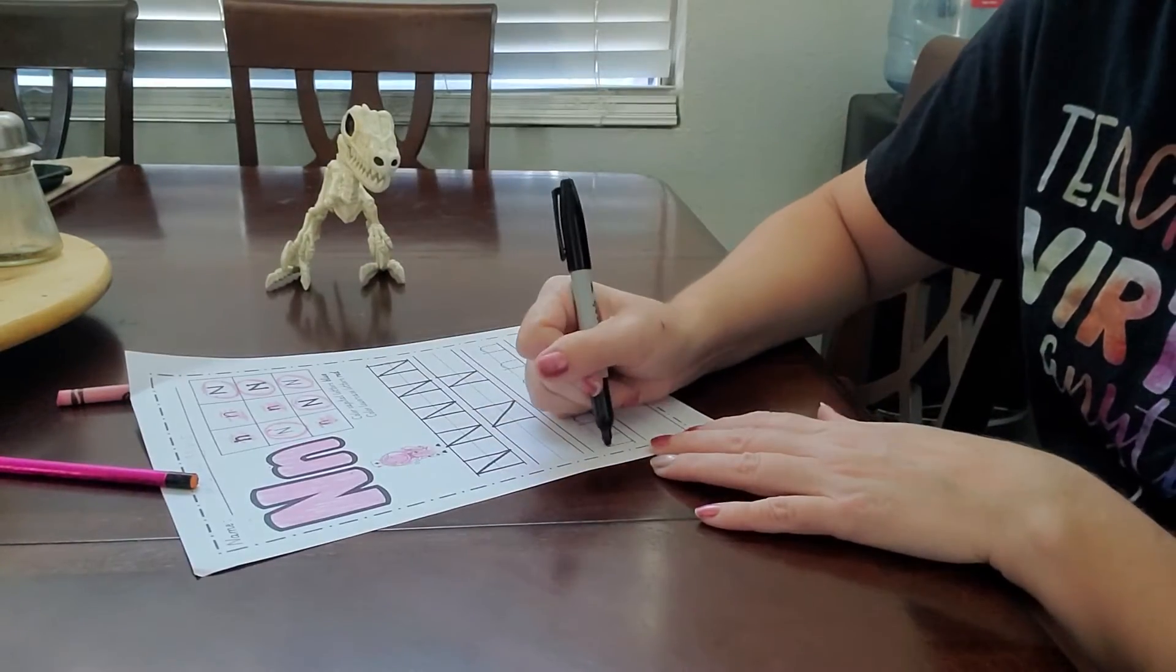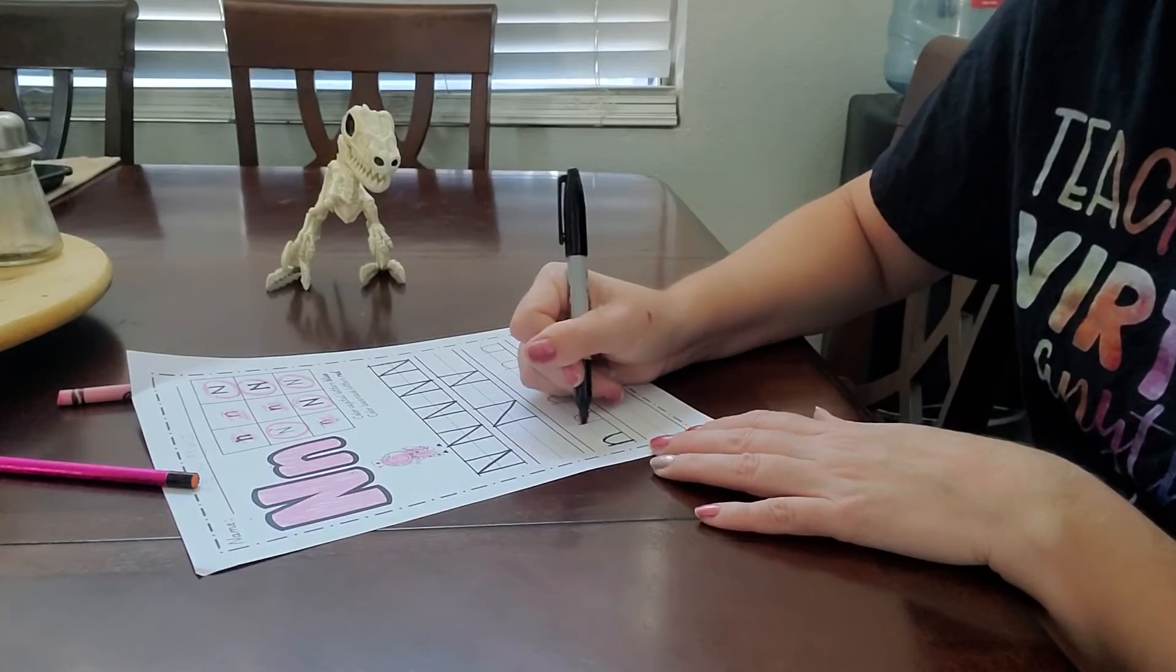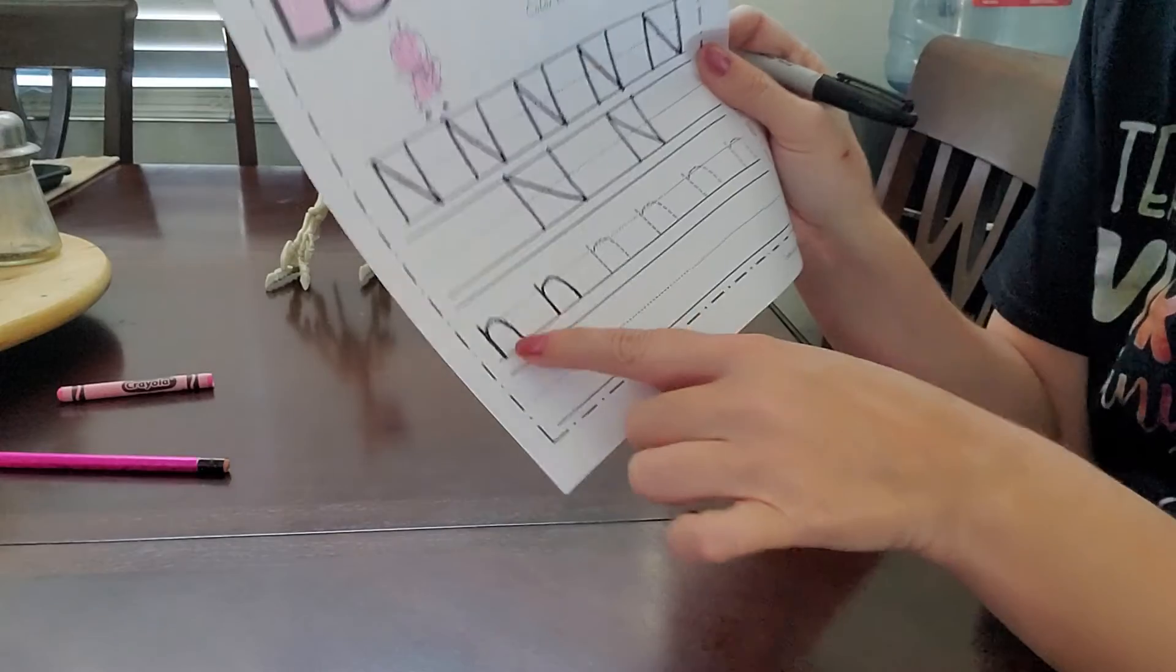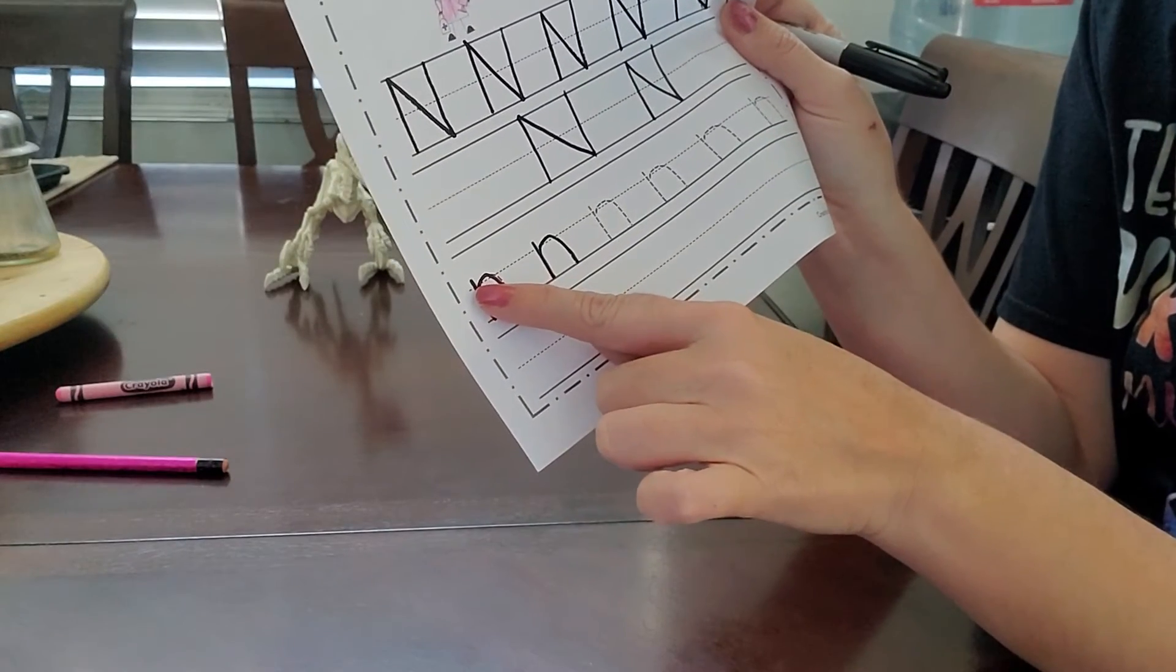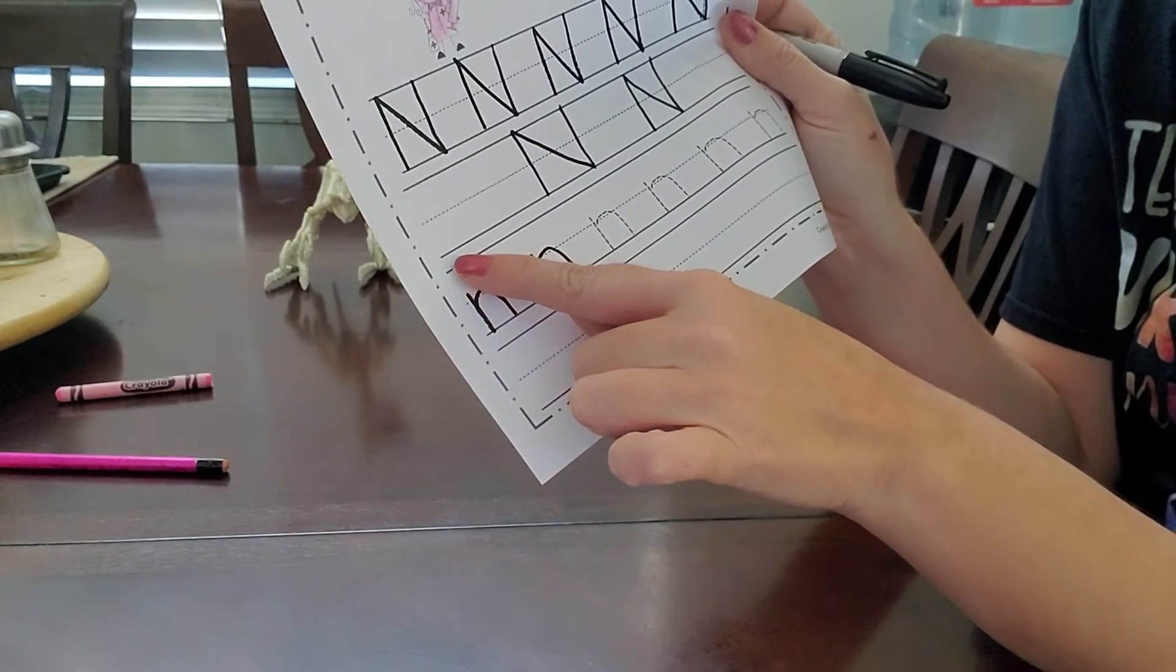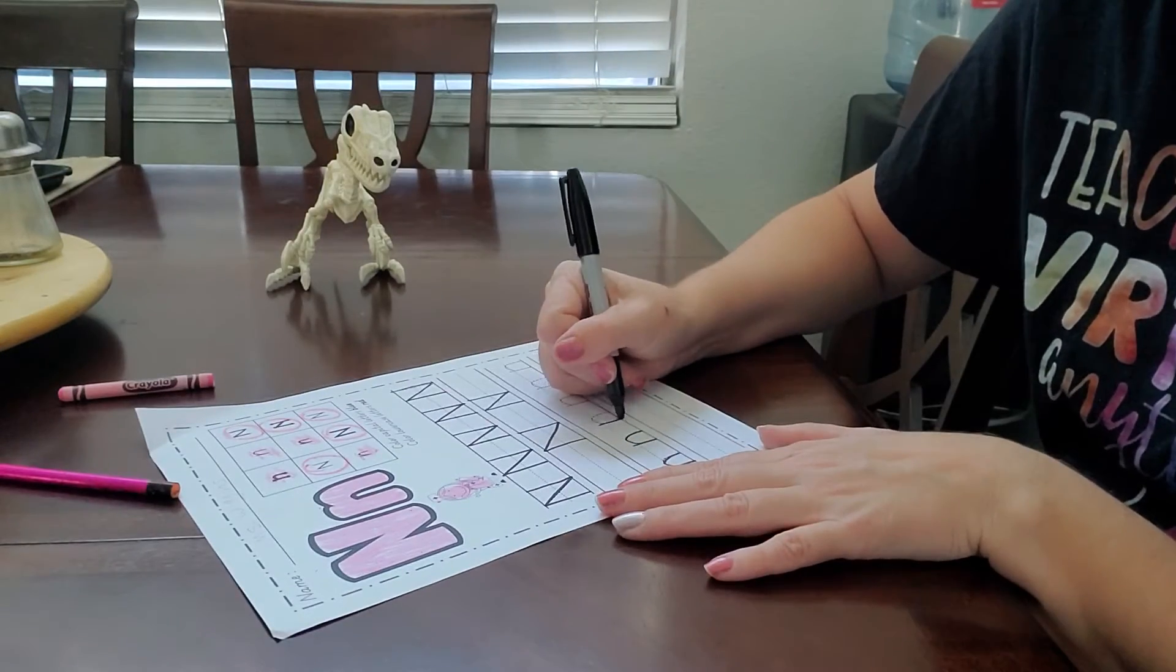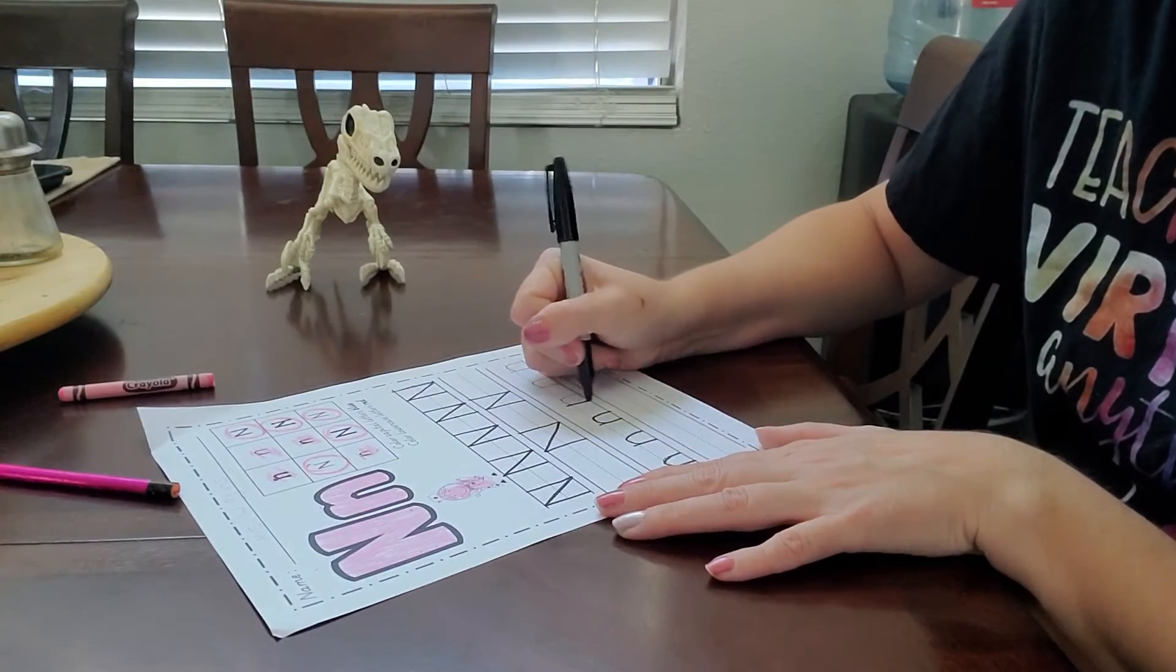And now trace your little Ns. The little N is a straight line down and a rainbow. Straight line down and a rainbow. Now you need to be sure that you only have a little line that starts at the diagonal line. If you put it all the way up here, that's a different letter. We don't want to do a different letter. So trace all your little Ns.